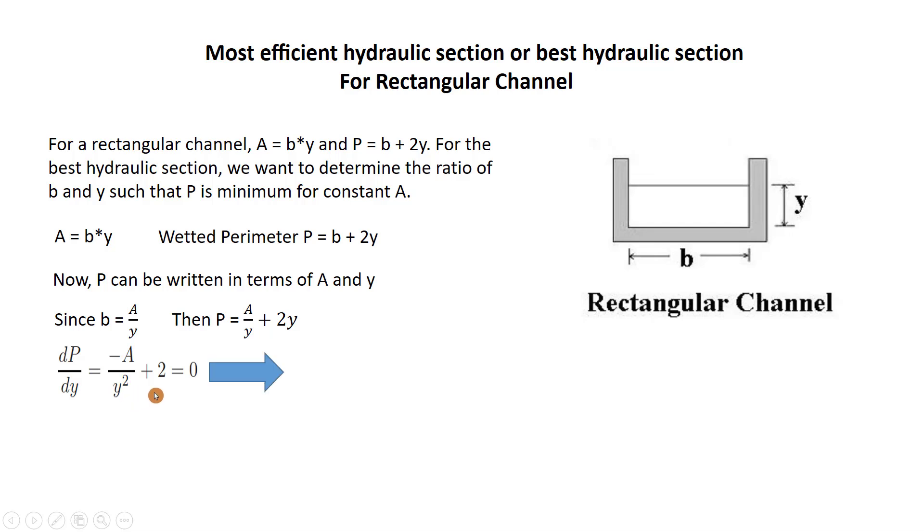We get the derivative which equal to minus A over Y squared plus two. Then by more simplification we get A over Y squared equal to two. But A equal to B Y, therefore by replacing A by B Y it will be B Y over Y squared equal to two. One Y cancel another Y in the denominator.